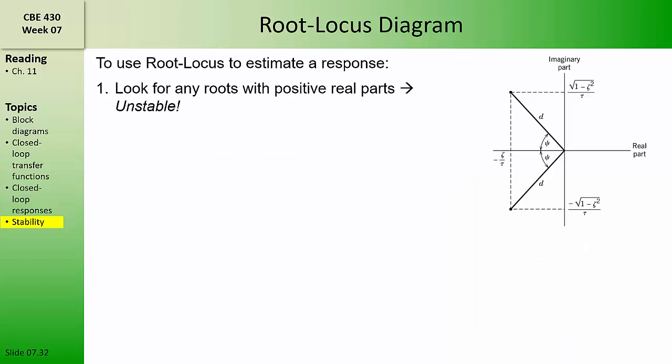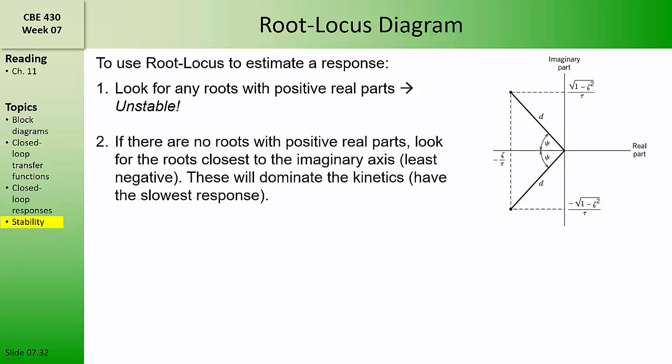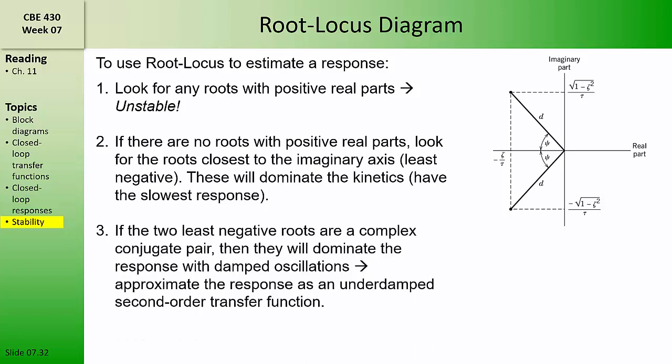First, we should look for any roots with positive real parts — any roots on the right-hand side of the imaginary axis represent unstable poles. If there are no roots with positive real parts, we look for the roots closest to the imaginary axis, the least negative roots. These will dominate the kinetics because their exponentials decay more slowly. If the two least negative roots are a complex conjugate pair, they will dominate the response with damped oscillations, and we can approximate the damping coefficient zeta and the time constant tau from the real and imaginary parts of that pair.